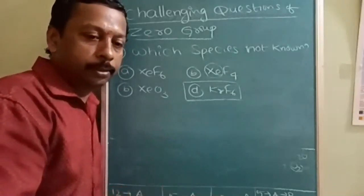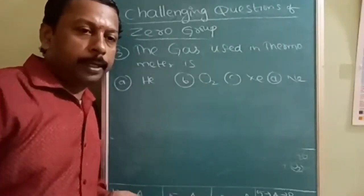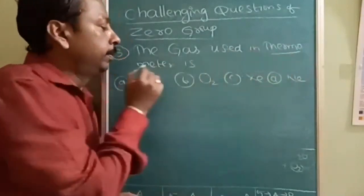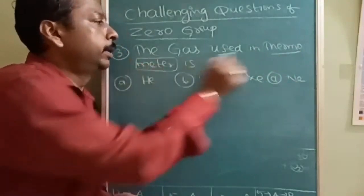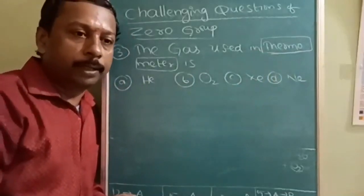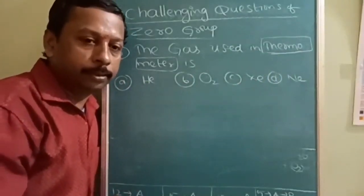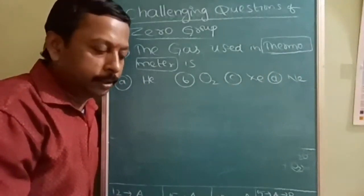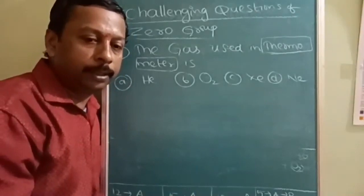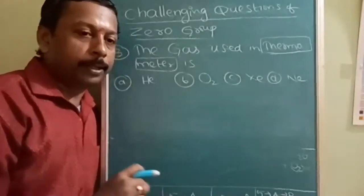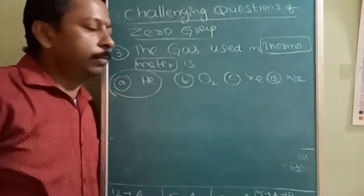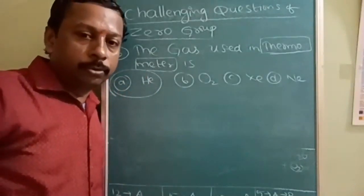Next question is: in uses of the inert gases, the gas used in thermometer, high temperature thermometer. When one of the inert gas finds use in the measurement of high temperature thermometers. Options are helium, oxygen, xenon and neon. So think and tell, you need not to remember, there is a logic. Answer to this question is helium because it provides the inert atmosphere when high temperature is used.